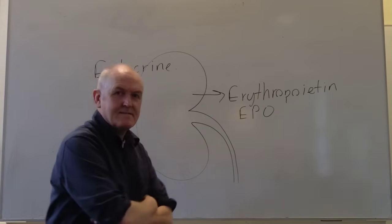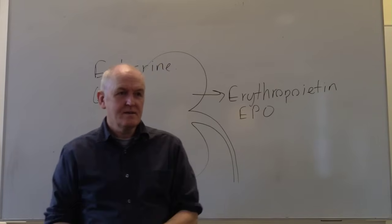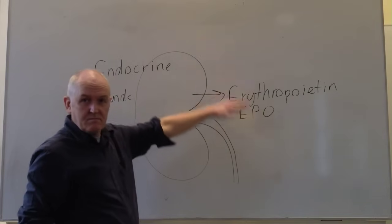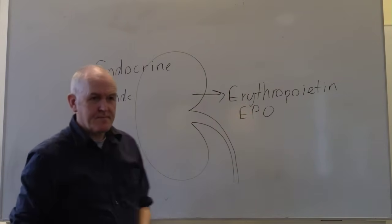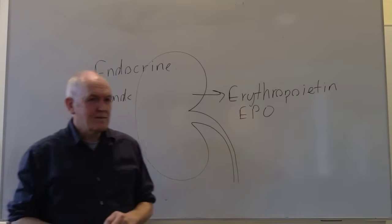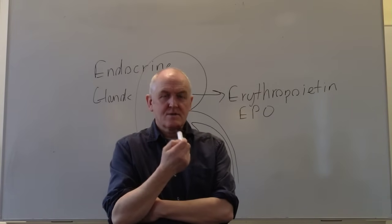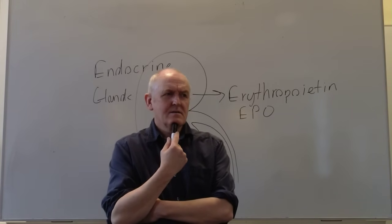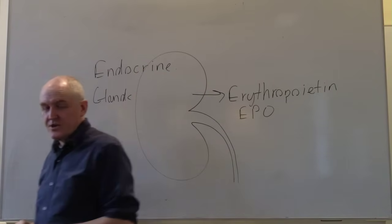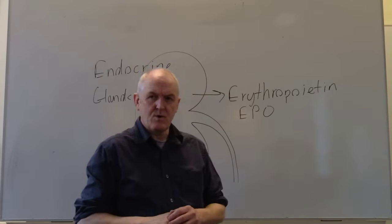Red blood cells carry haemoglobin carrying oxygen. If we have more red blood cells carrying more oxygen, the kidneys can cut down on the erythropoietin — homeostatically regulating red cell mass. We don't want too many red cells, which would be polycythaemia, and we don't want too few, which would make the patient anaemic.